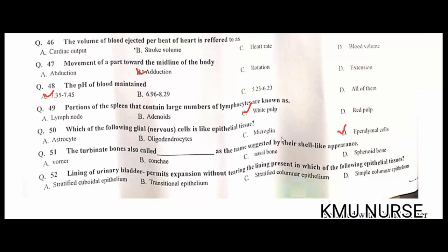The turbinate bones are called conchae, a name suggested by their shell-like appearance. B is the correct answer. The lining of the urinary bladder allows expansion without tearing. This lining is present in which of the following epithelial tissues? Transitional epithelium. B is the correct option.